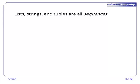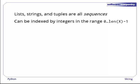Lists, strings, and tuples are all sequences, which means they can all be indexed by integers in the range 0 to len-1. But they can also be sliced using a range of indices.